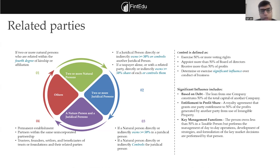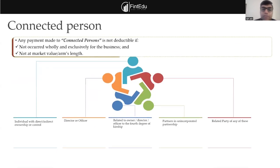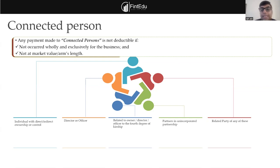So there are different provisions: one is ownership, another is control, and the third is connected person. Connected person is not found in transfer pricing regulations of other countries. The reason is that UAE does not have individual taxation, so there is always a possibility to shift profit from a juridical person to an individual person. Any such payment, if it is wholly and exclusively for business operations and at arm's length, there is no issue.